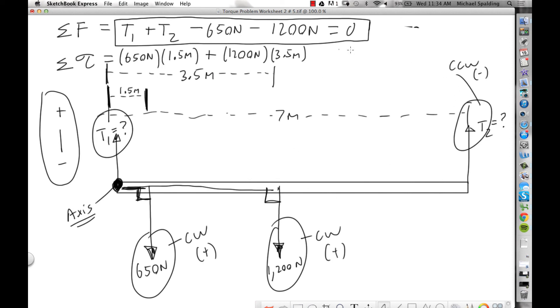Okay, and then we go to the negative torque, so minus T2 times 7. The torques will cancel to zero.